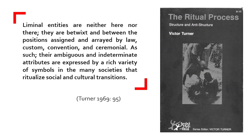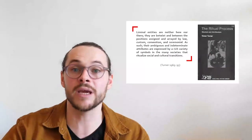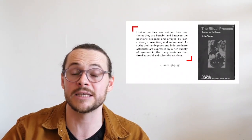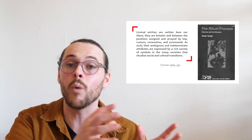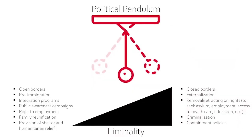Victor Turner writes in The Ritual Process: Structure and Antistructure: 'Liminal entities are neither here nor there. They are betwixt and between the positions assigned and arrayed by law, custom, convention, and ceremonial. Their ambiguous and indeterminate attributes are expressed by a rich variety of symbols in the many societies that ritualize social and cultural transitions.' Essentially, liminality is being in transition — a state of flux, a state of change from one thing to the next. I'd like to link this to the politics of immigration because I think there's a connection between immigration politics and the likelihood of people feeling in a liminal space as migrants.